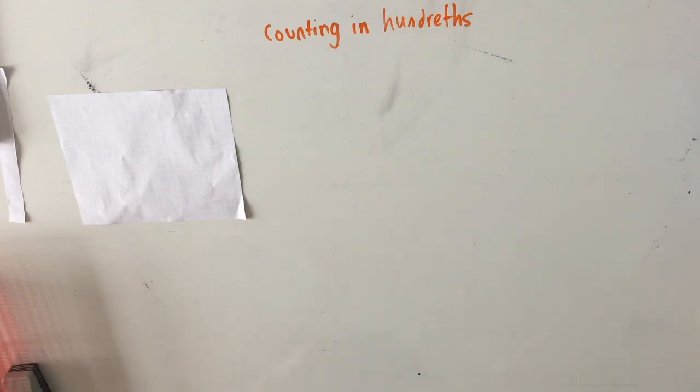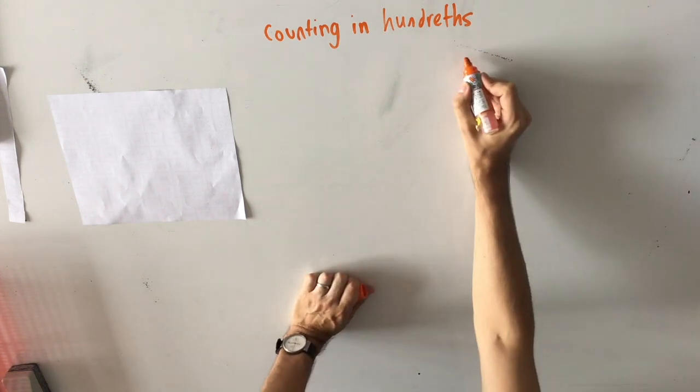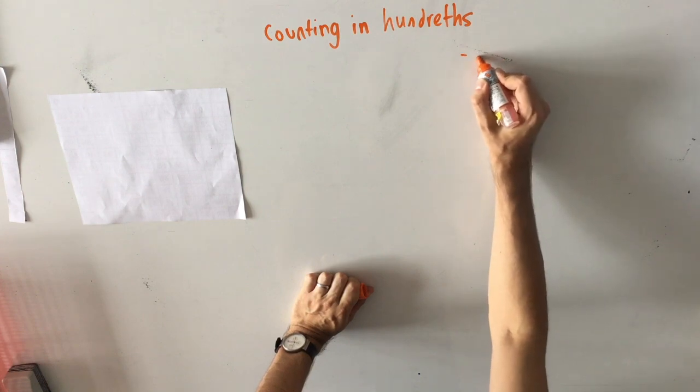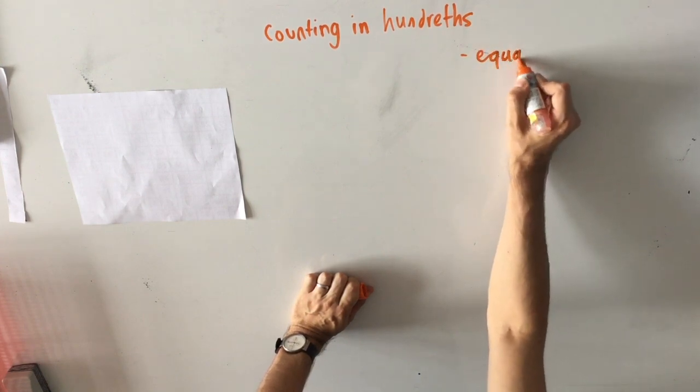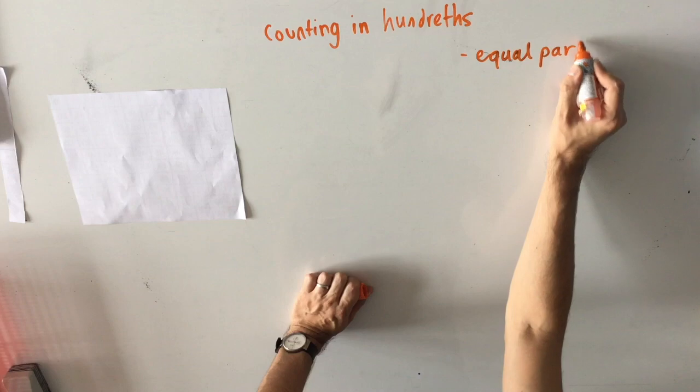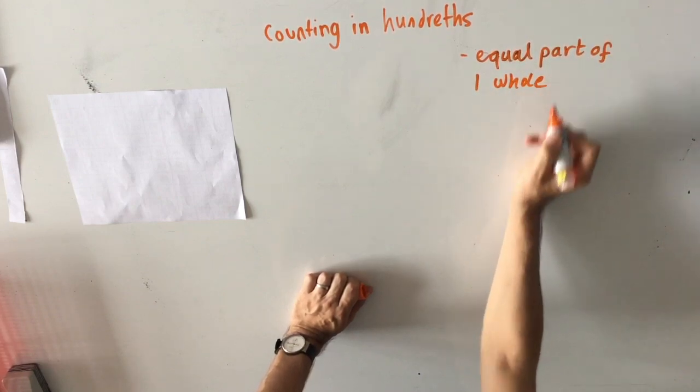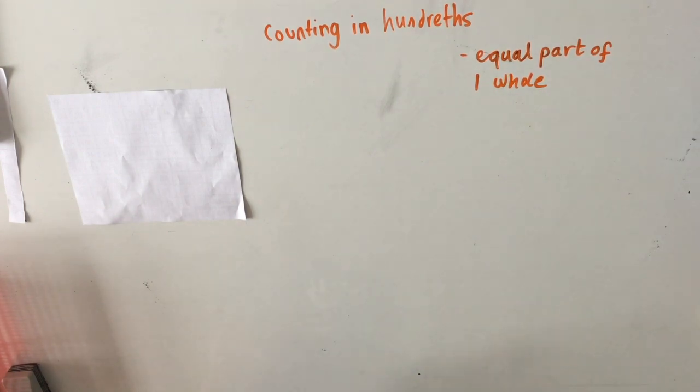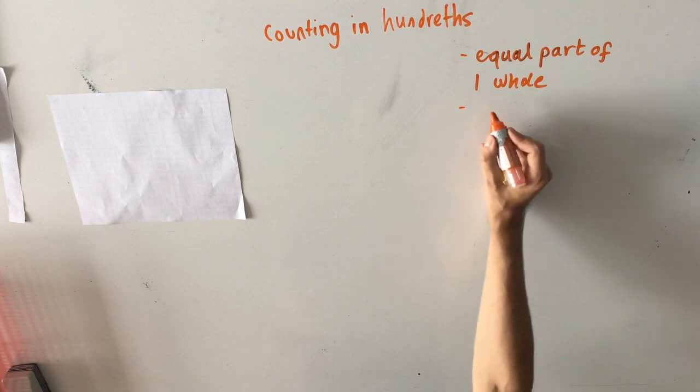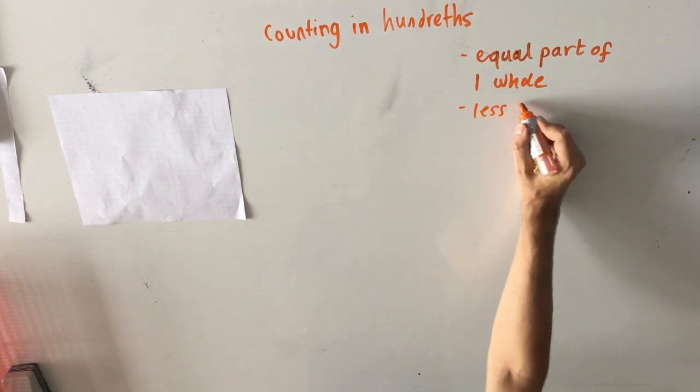Before we start counting in hundredths, let's remember a few simple facts about fractions. First of all, a fraction represents an equal part of one whole, which means that a fraction, regardless of what it is, is less than one.